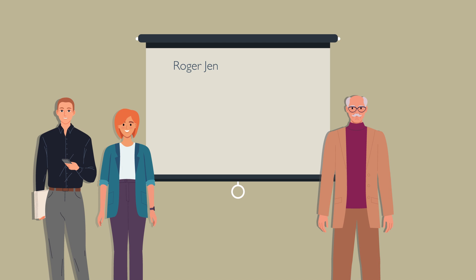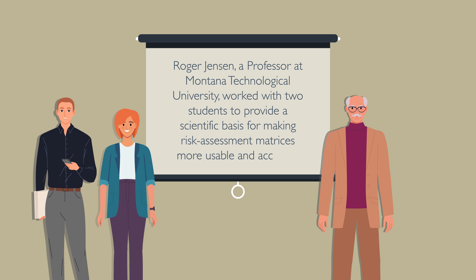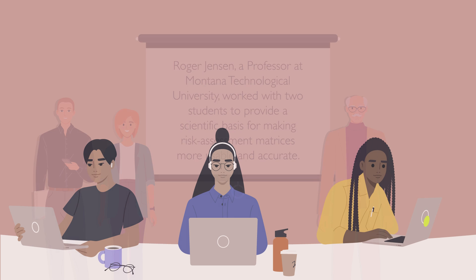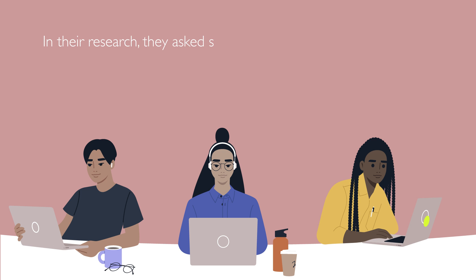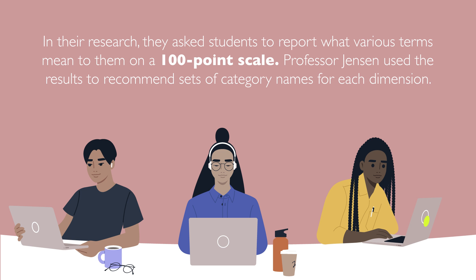Roger Jensen, a professor at Montana Technological University, worked with two students to provide a scientific basis for making risk assessment matrices more usable and accurate. In their research, they asked students to report what various terms mean to them on a 100-point scale. Professor Jensen used the results to recommend sets of category names for each dimension.